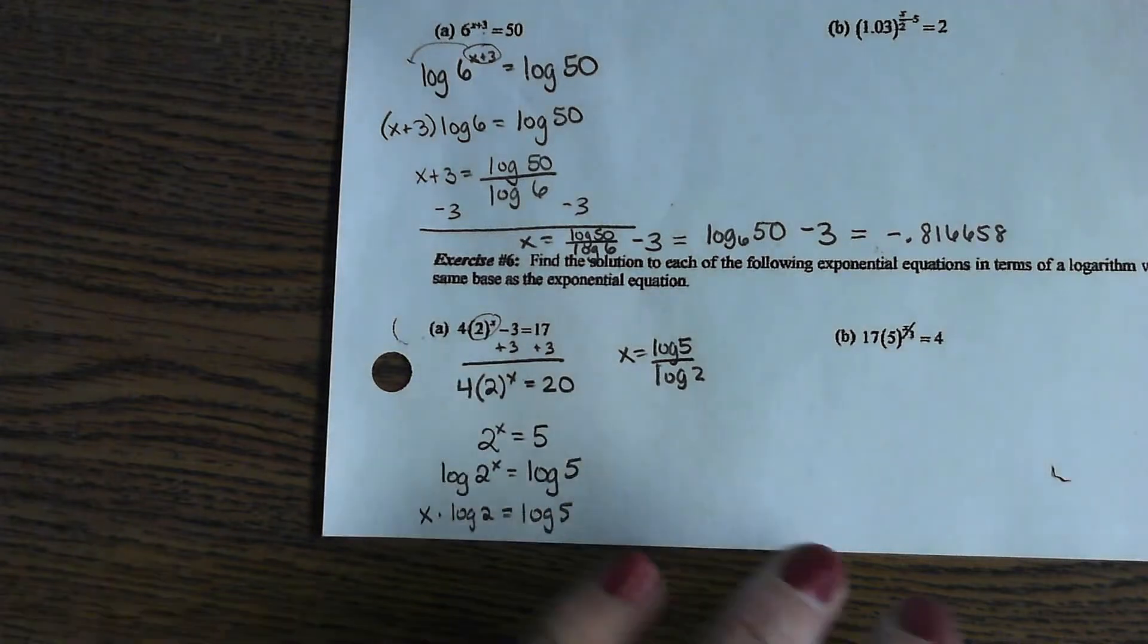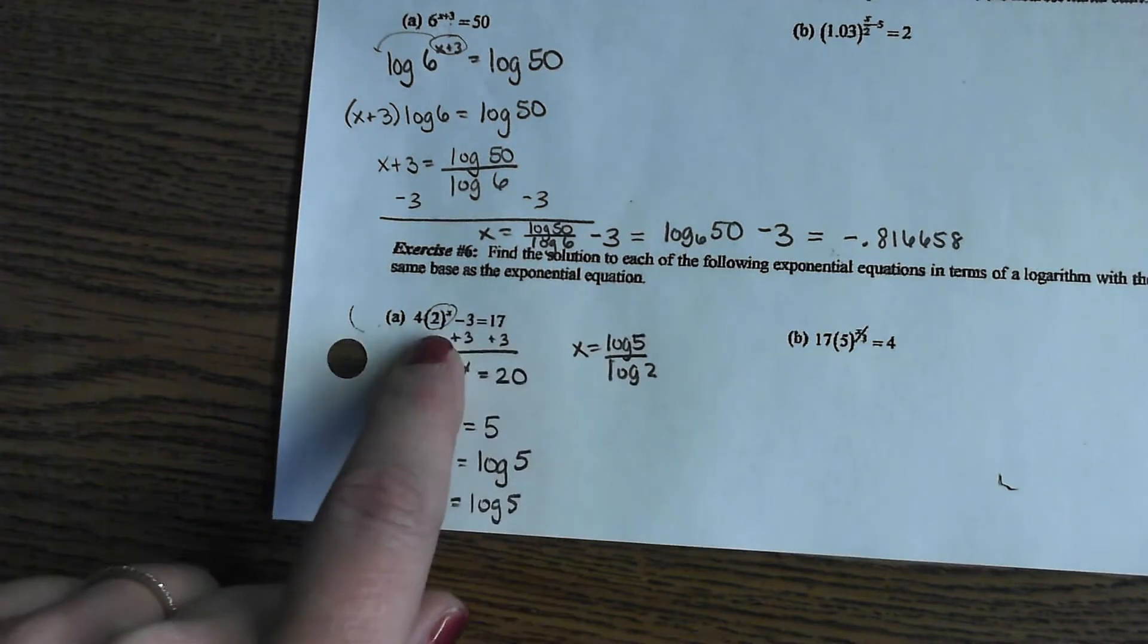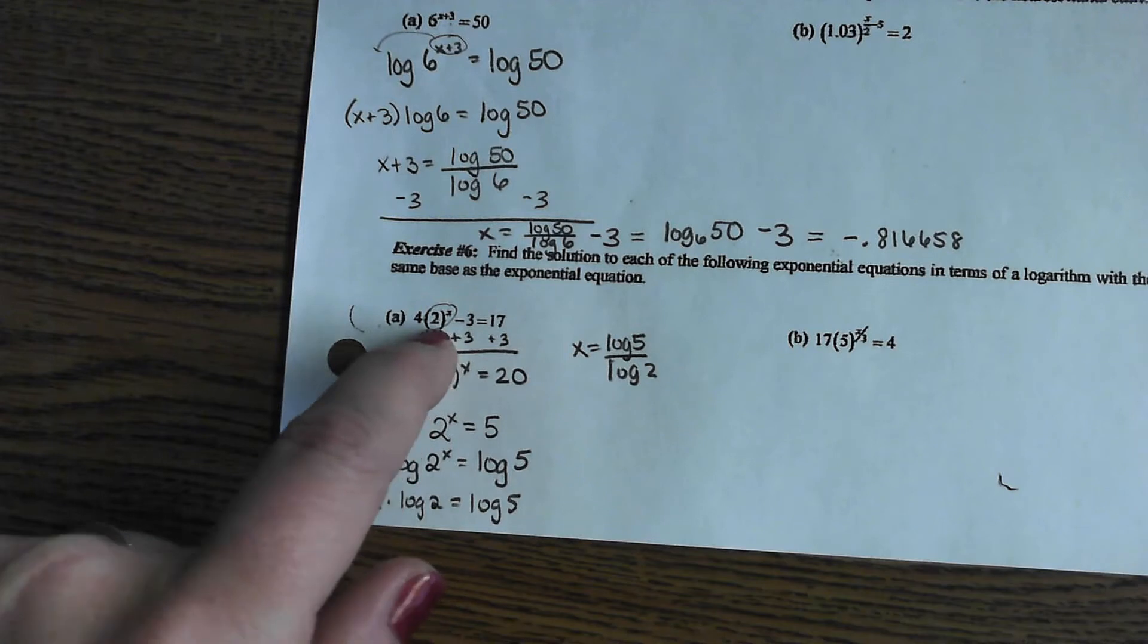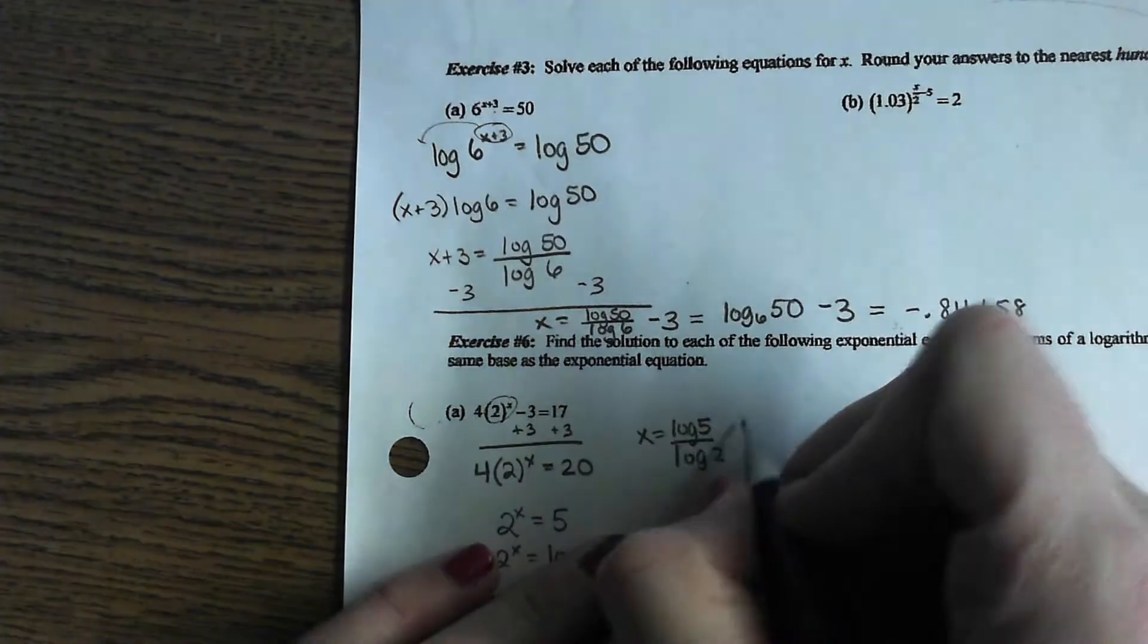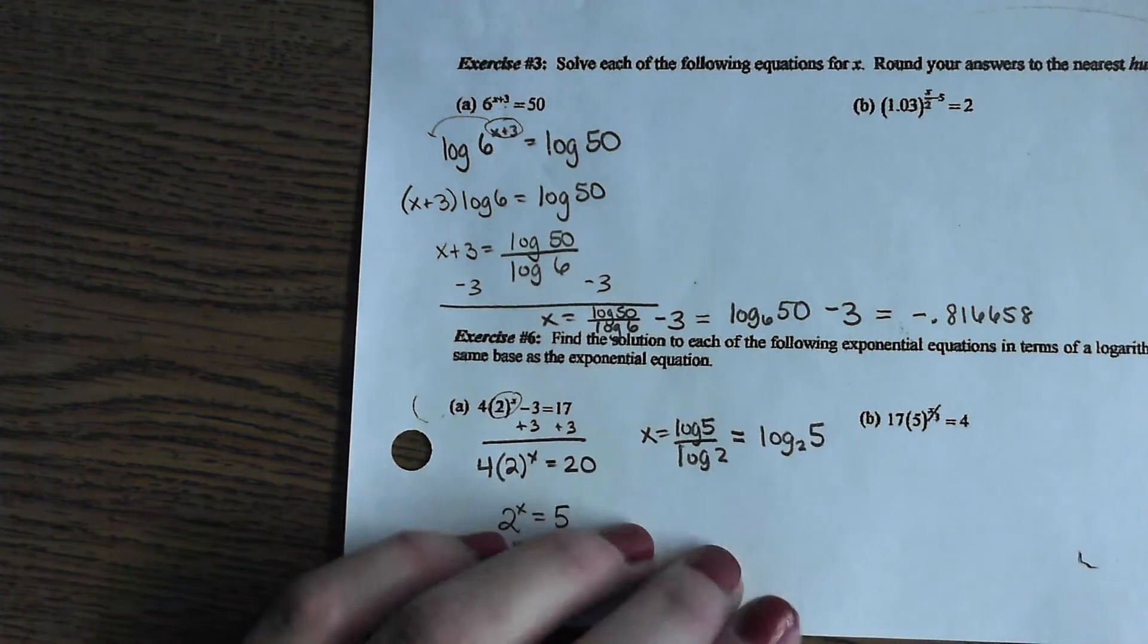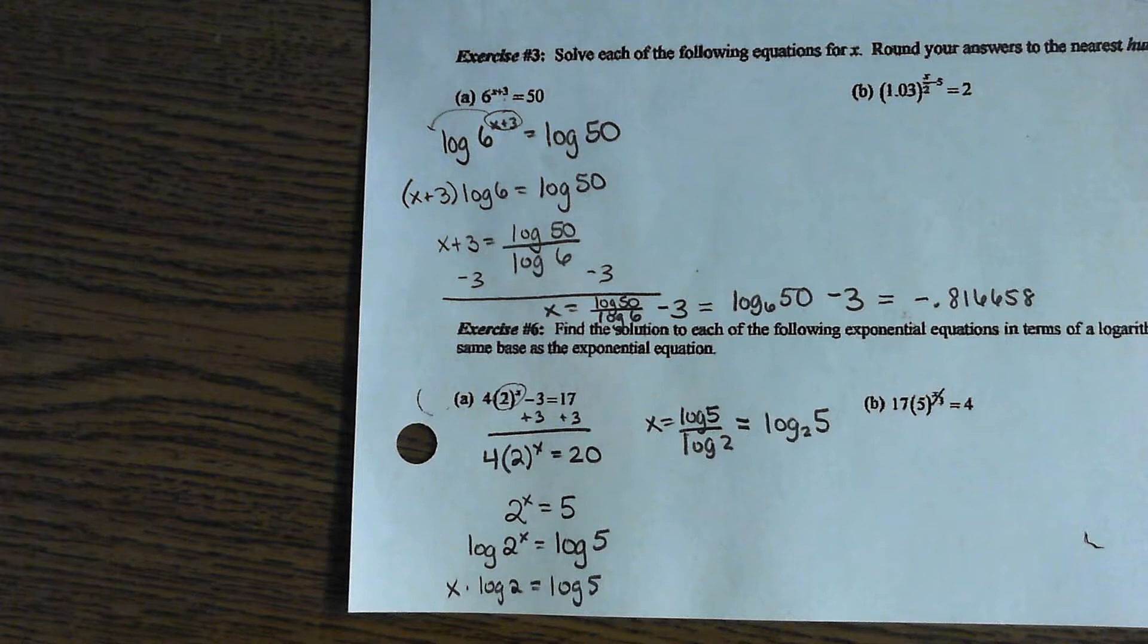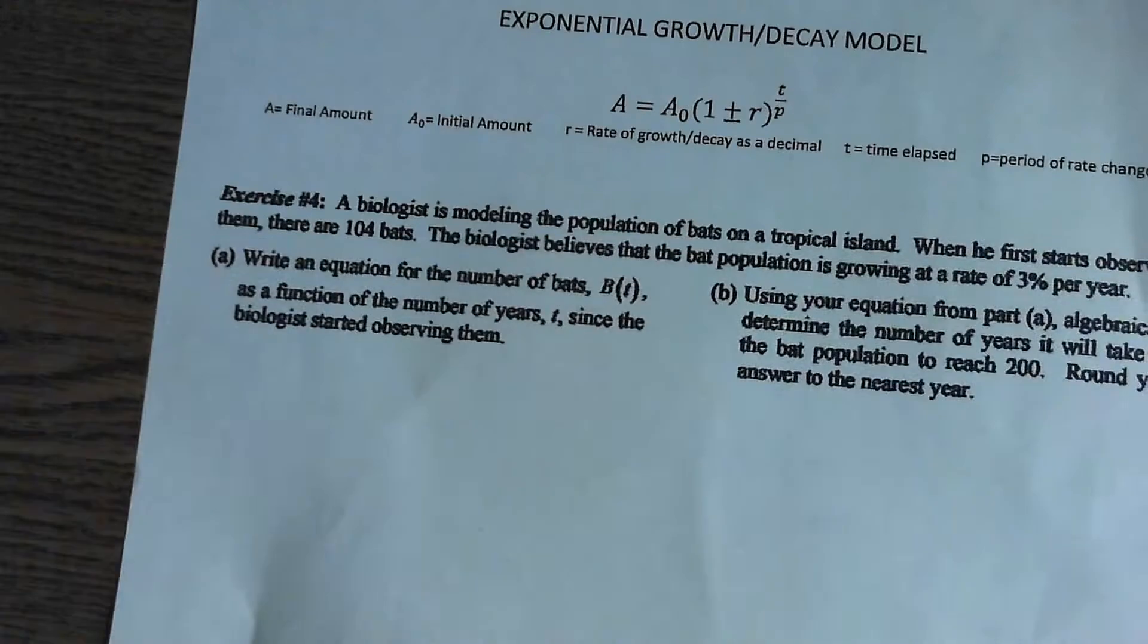Now, the way this one is phrased, find the solution to each of the following in terms of a log with the same base as the exponential equation. What is the base of that exponent? Two. So they really want us to write this as a log with a base of two. And that's just that change of base formula piece. That's just knowing to change it into a log with a base of two of five. Log base two of five by the change of base formula is the same thing as log of five over log of two. Good?